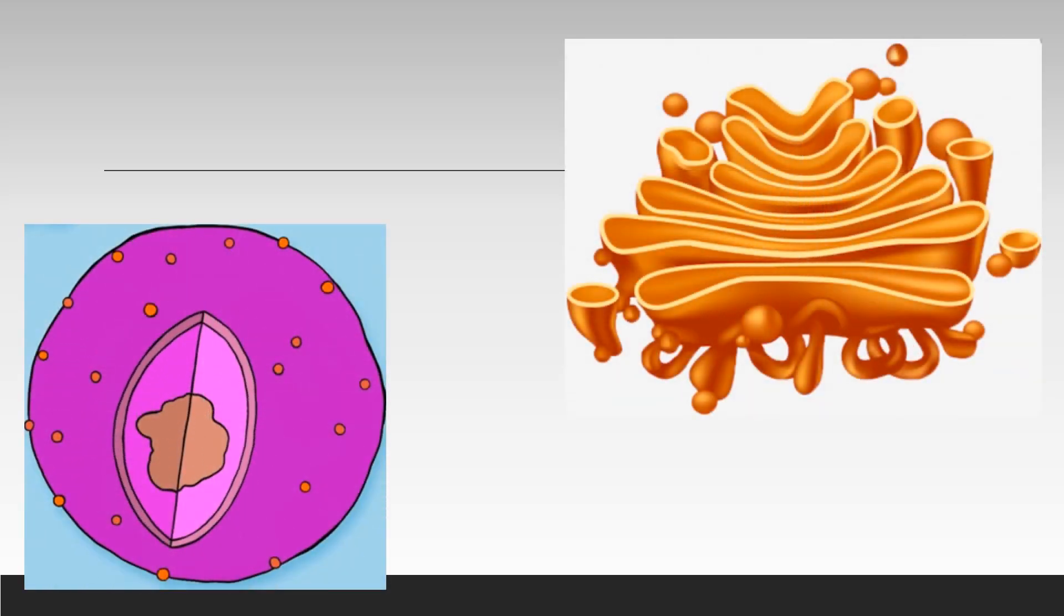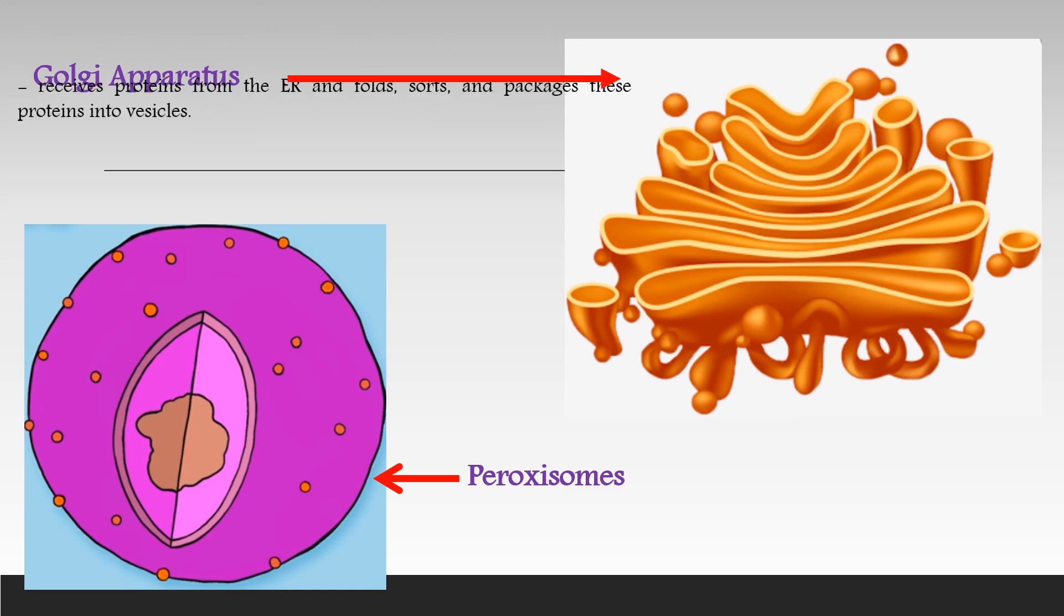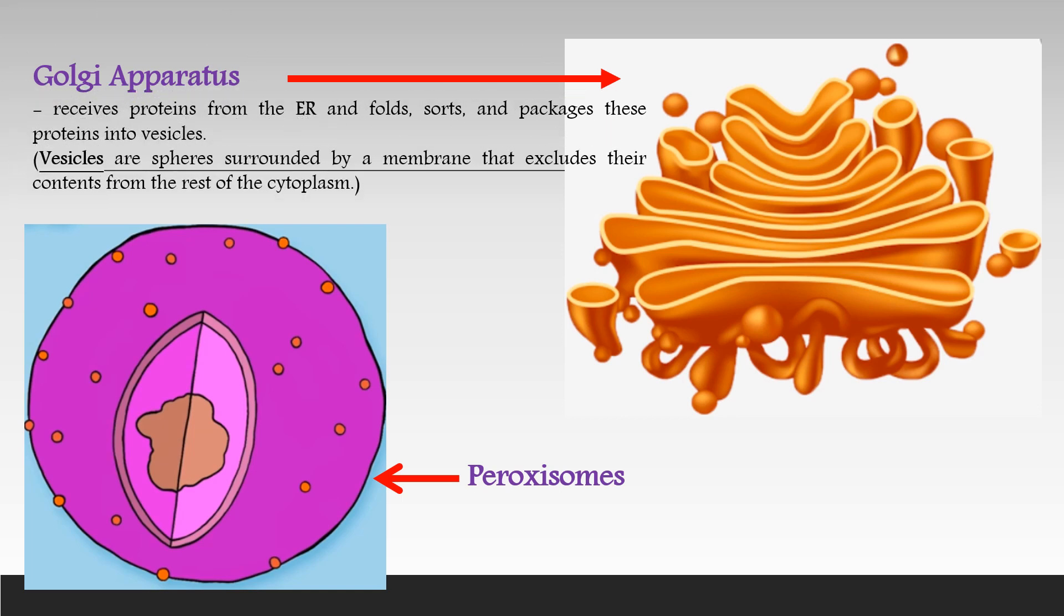Let's discuss the last part and function of the plant and animal cell similarities: the Golgi apparatus and peroxisomes. The Golgi apparatus receives proteins from the endoplasmic reticulum and folds, stores, and packages these proteins into vesicles. Vesicles are spheres surrounded by a membrane that excludes their contents from the rest of the cytoplasm.